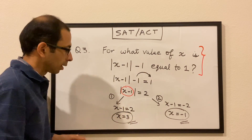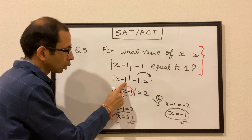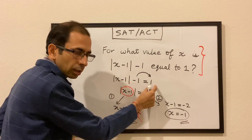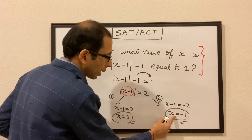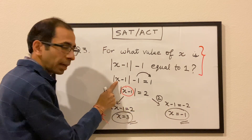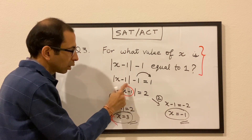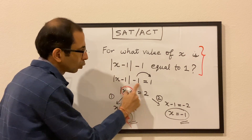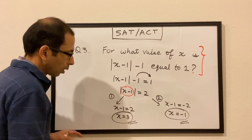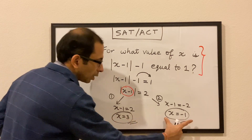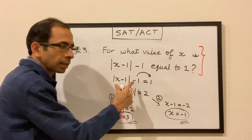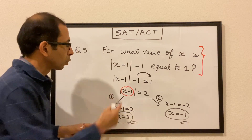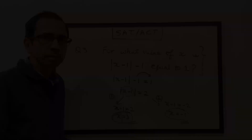We can double-check. When x equals 3: 3 minus 1 is 2, absolute value of 2 is 2, and 2 minus 1 is 1 — correct. When x equals minus 1: minus 1 minus 1 is minus 2, absolute value of minus 2 is 2, and 2 minus 1 is 1. Both solutions satisfy the equation. So x equals 3 and x equals minus 1 are the two solutions.